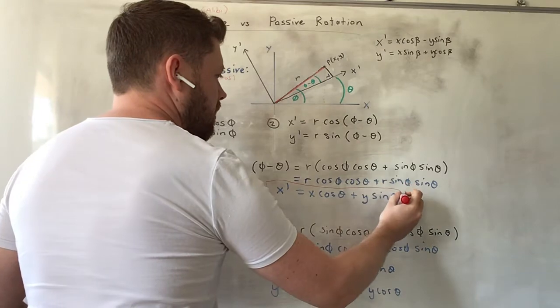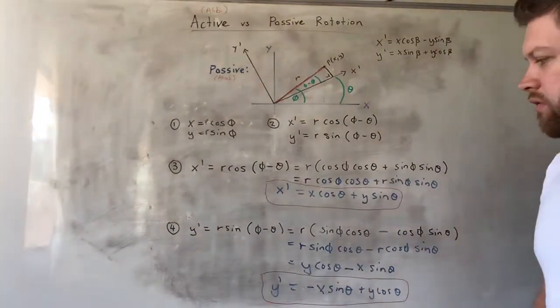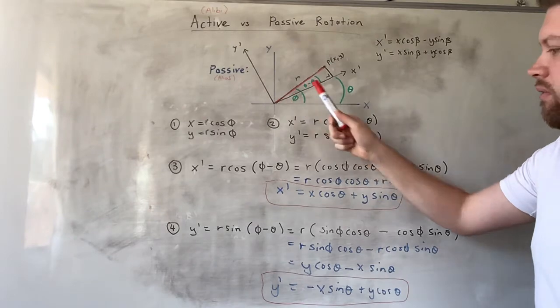So these are our new expressions for x-dash and y-dash under a passive rotation. This is the new coordinate of this point inside this reference frame. And this is the y-coordinate inside the new reference frame of the same point P.